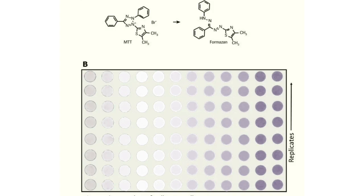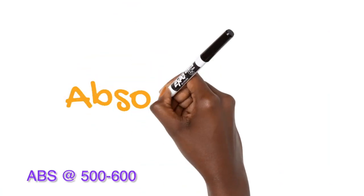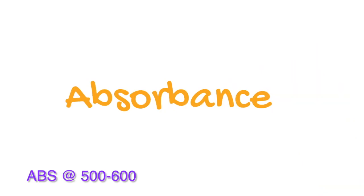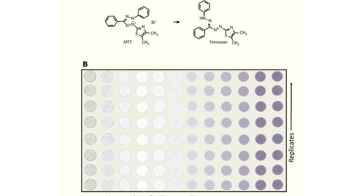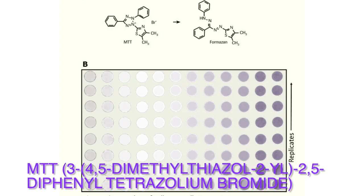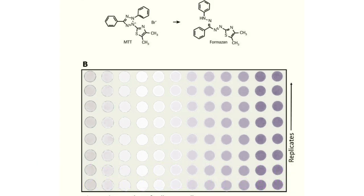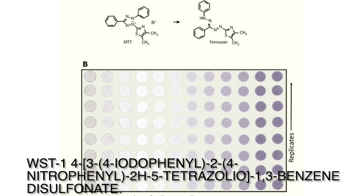This is absorbance-based — when you dissolve the product, you read the absorbance at between 500 to 600 nanometers. These tetrazoleum-based compounds include MTT, which produces an insoluble formazin requiring DMSO to dissolve. But there are also soluble forms: MTS, XTT, and WST-1 compounds, which are soluble. All are based on the same principle of viable or metabolically active cells reducing these compounds as a product of respiration, resulting in formazin production that correlates with the number of viable cells.